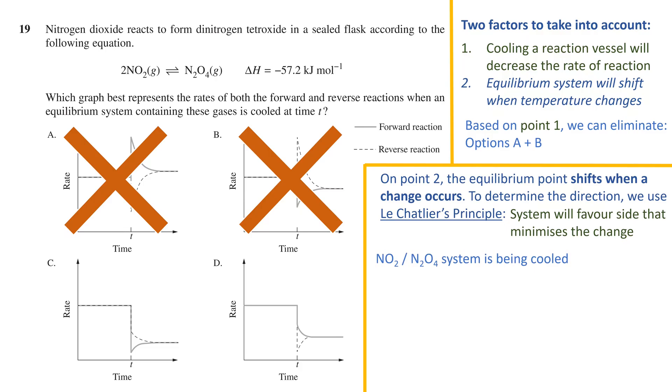In this case, the NO2-N2O4 system is being cooled. Using Le Chatelier's principle, that means that the reaction that increases the temperature will be favored. To determine which reaction that is, we need to look back at the equation in the question. Looking at the delta H value, we see that it is negative, meaning that the forward reaction is exothermic.